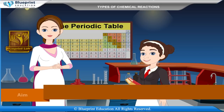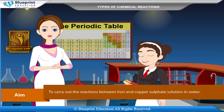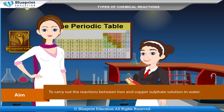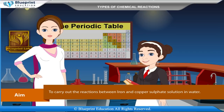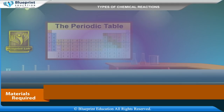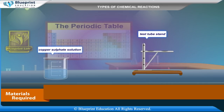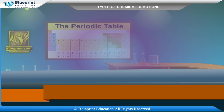Our aim is to carry out the reactions between iron and copper sulphate solution in water. The materials required are test tubes, iron nails, copper sulphate solution, and a test tube stand.